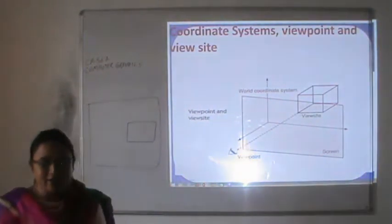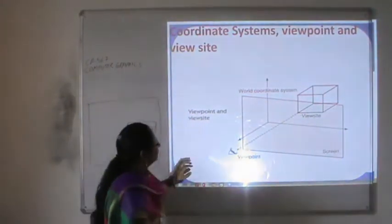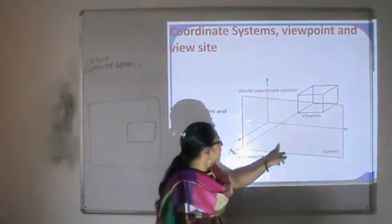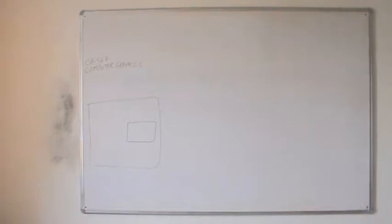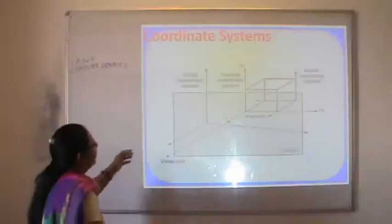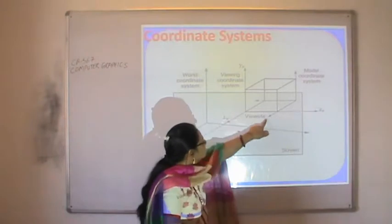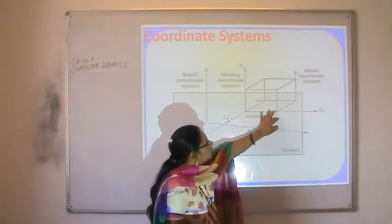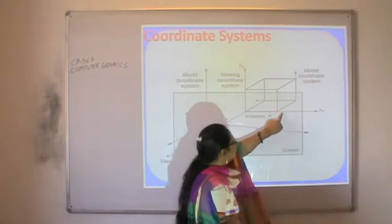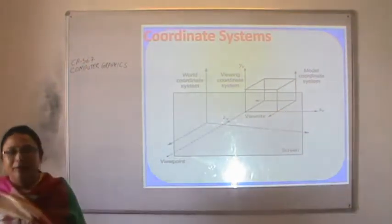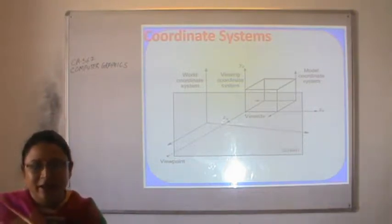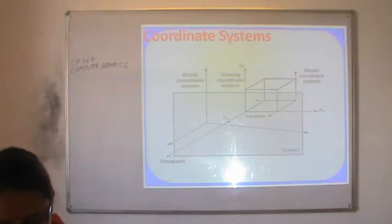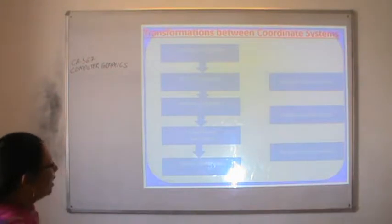These are the coordinate systems with viewpoint and view side. This is the world coordinate system and this is the view side. We want to view a cube. We have to map the model coordinate system to the world coordinate system, and then map the world coordinate system to the device coordinate system. Those steps are defined in the pipeline.